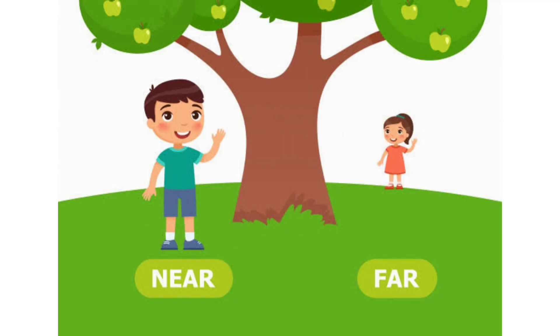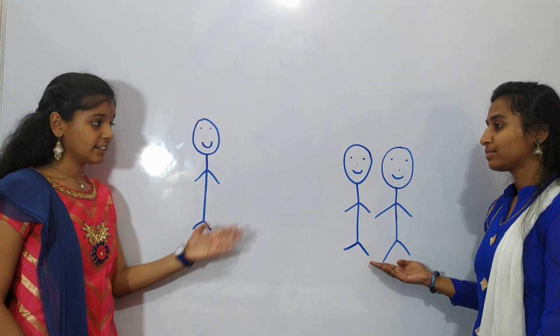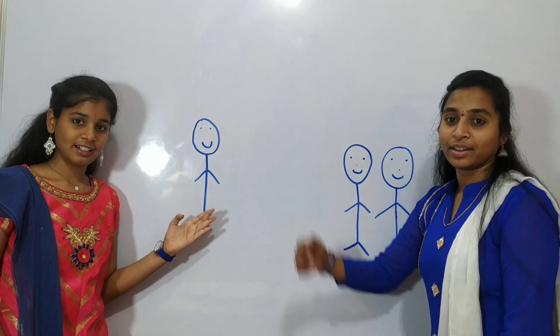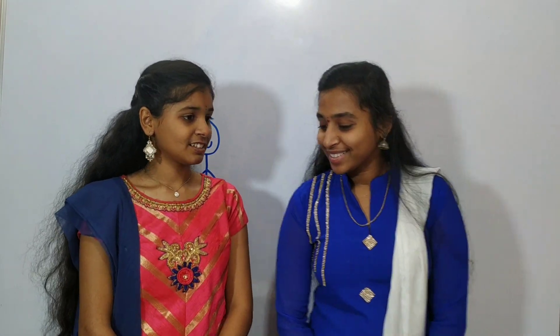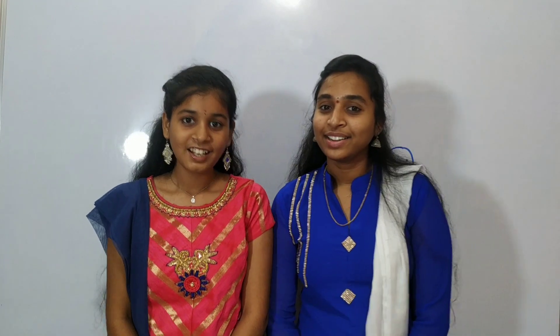Now let us get into the topic near and far. See this — here are two children and they are near. This child is far from them. Near, far. We both are near. Now we both are far. Near, far.